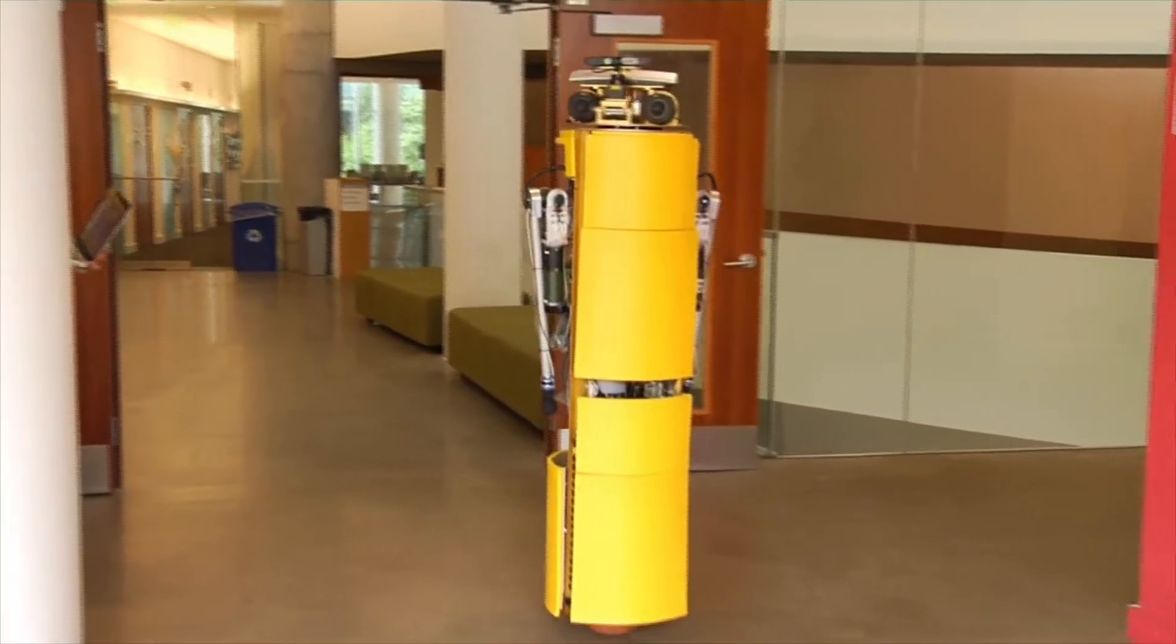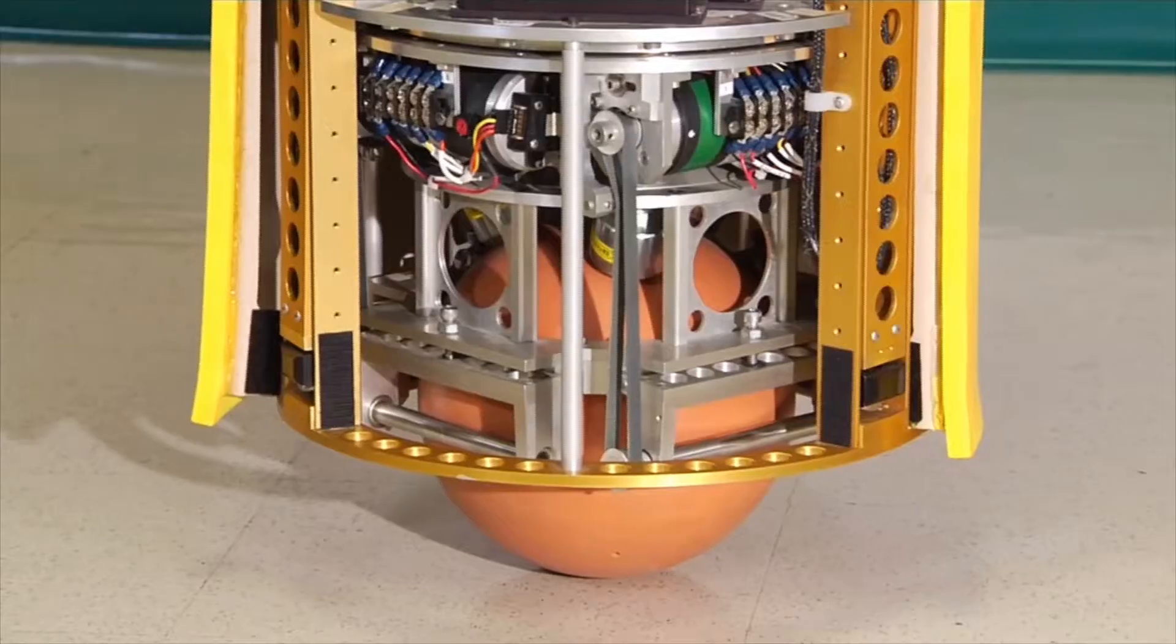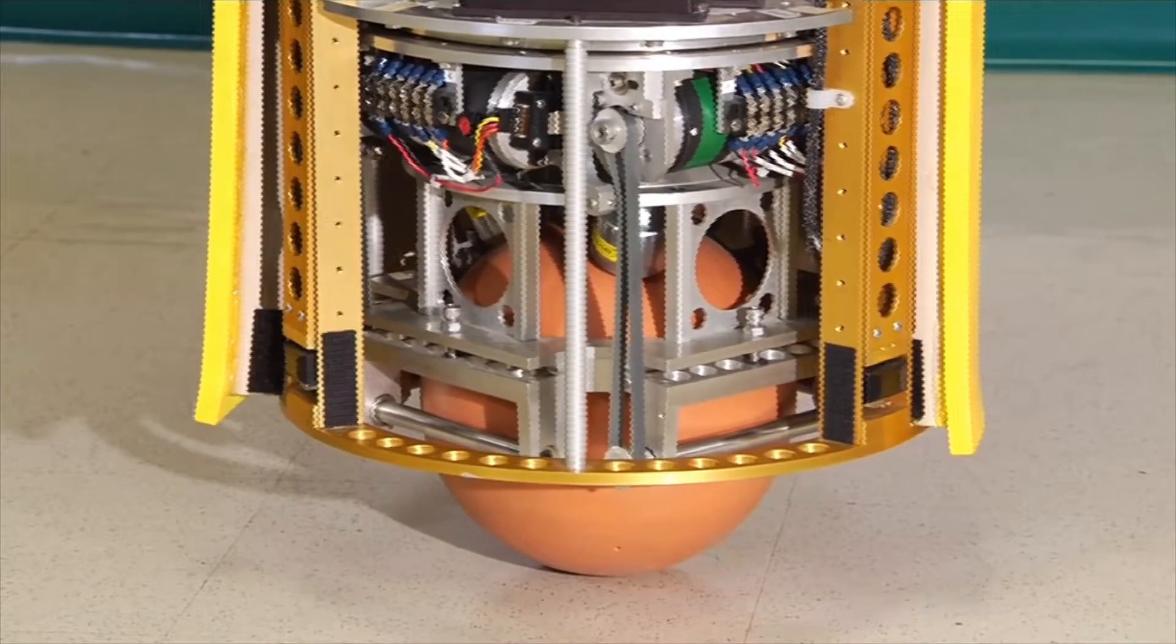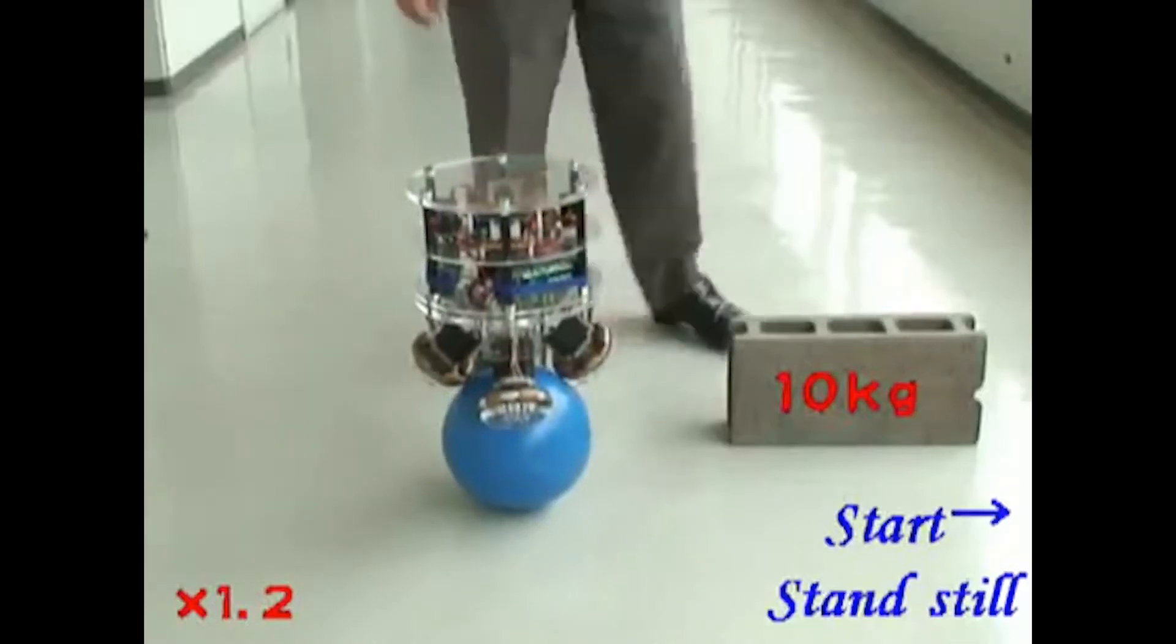The robot was first developed by Ralph Hals at CMU. The Ballbot balances dynamically on a single spherical wheel. Other institutions have developed their own versions.